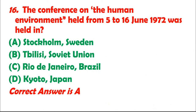Question 16: The Conference on the Human Environment held from 5 to June 16, 1972, was held in: A. Stockholm, Sweden. B. Tbilisi, Soviet Union. C. Rio de Janeiro, Brazil. D. Kyoto, Japan. Correct answer is A.